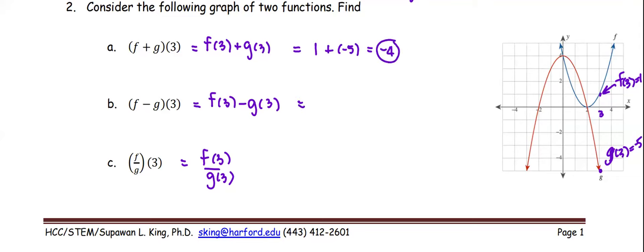f at 3 minus g at 3, which is 1 minus negative 5, that gives us positive 6.